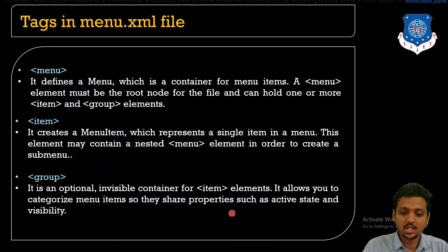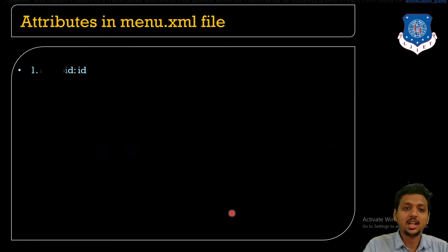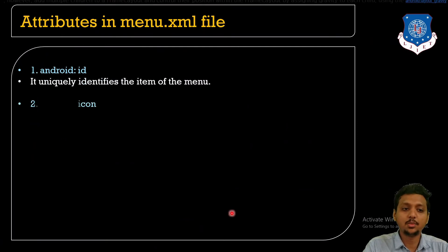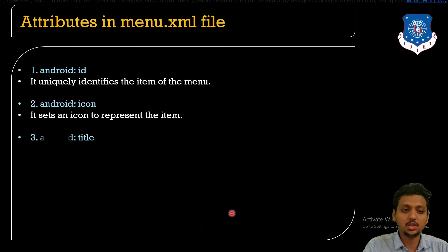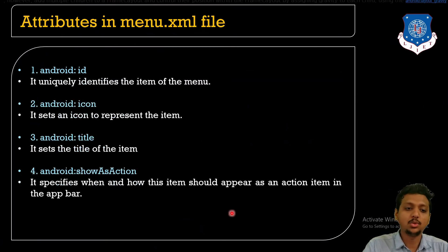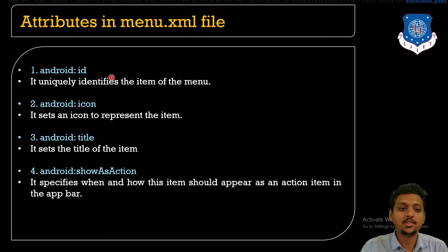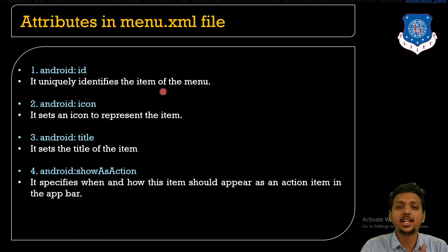These are all the tags. Now let's look at the different attributes we need to define inside the item tag. The first attribute is android:id — we need to give a unique ID to each and every separate item in the menu.